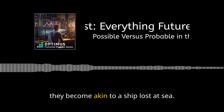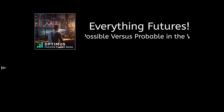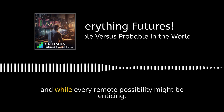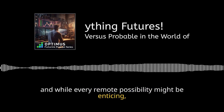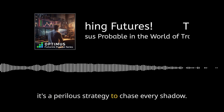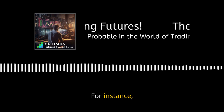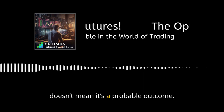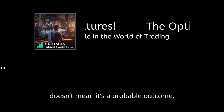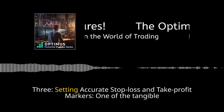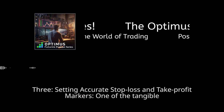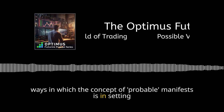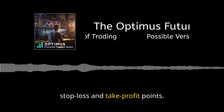The world of trading is vast, and while every remote possibility might be enticing, it's a perilous strategy to chase every shadow. For instance, just because a stock has the potential to quadruple in value doesn't mean it's a probable outcome. One of the tangible ways in which the concept of probable manifests is in setting stop loss and take profit points.